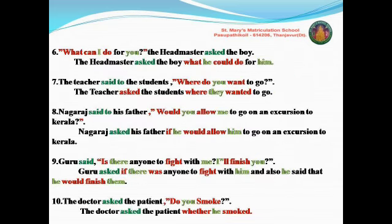Next sentence, the sixth one: 'What can I do for you? The headmaster asked the boy.' Look here — what type of sentence is given? A question mark is given, so it is an interrogative type. From interrogative, there are two types of sentences: WH or yes/no type question. It starts with 'what' — it is a WH question. If it is WH, you write the WH word as it is; you should not write any conjunction word for the interrogative sentence.